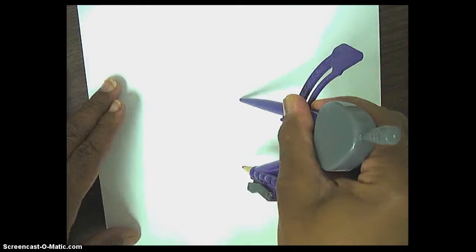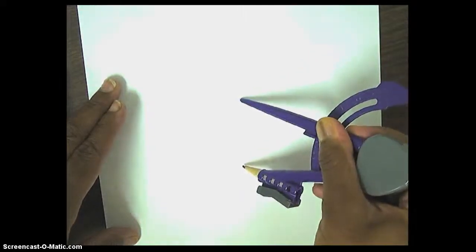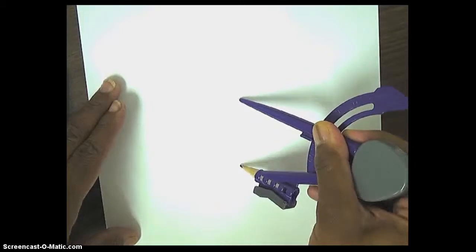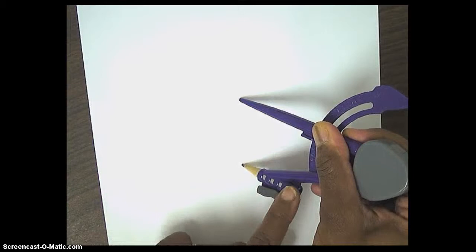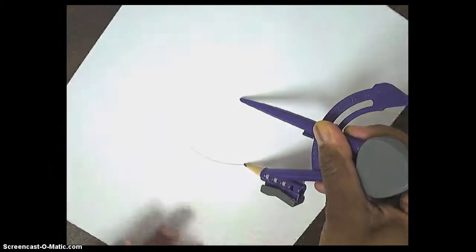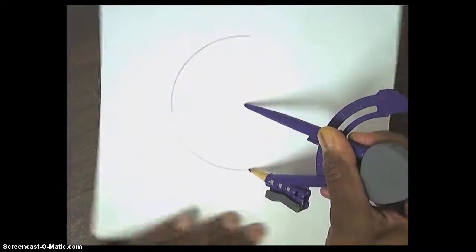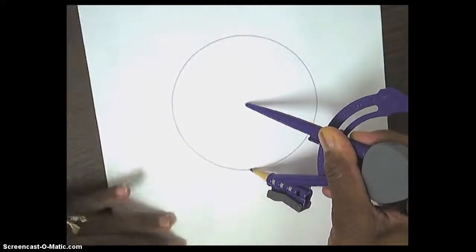You're going to place the anchor on the paper to hold it down. Place your compass at about a 45-degree angle and making sure that the pencil lead is on the paper. And instead of turning the actual compass, you're going to turn the paper. And as you turn the paper, you see that you are making a beautiful circle.